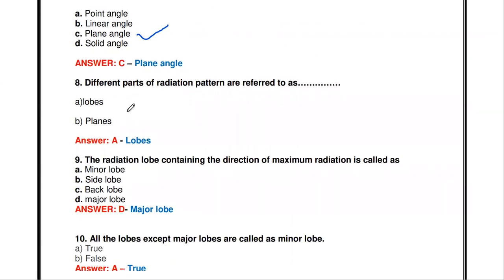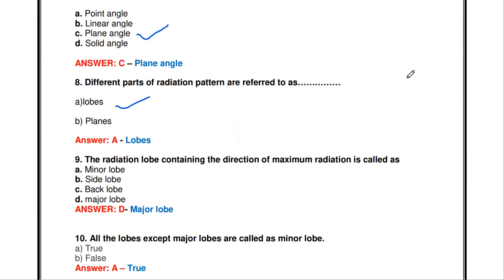The different parts of a radiation pattern are referred to as loops or planes. The answer is loops. So the different parts of the radiation pattern are called loops — the main loop, side loop, and back loop.